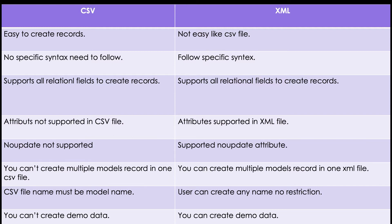In the CSV side, you can only create records for a specific model — you cannot create records for multiple models in one file. That's a restriction. In the XML side, you can create records for multiple models in one file with no such restriction. Also in the CSV side, the file name must match the model name — otherwise Odoo throws an exception if that model is not found in the database. That's a main disadvantage of CSV.